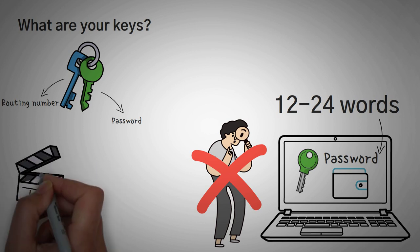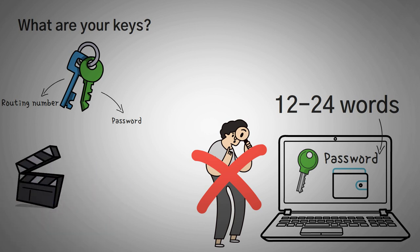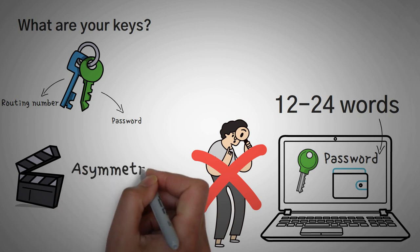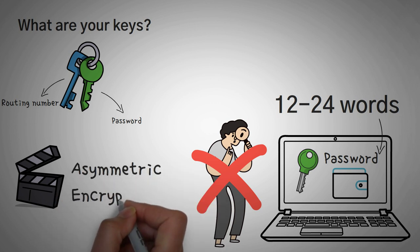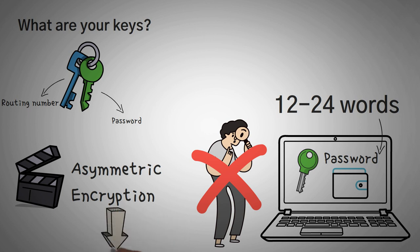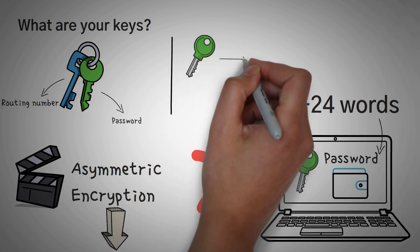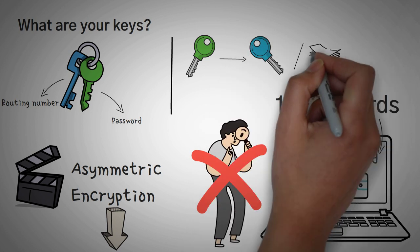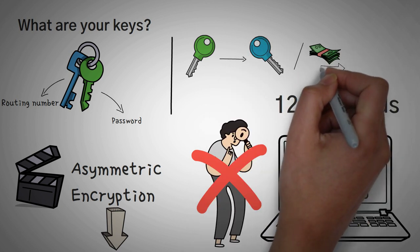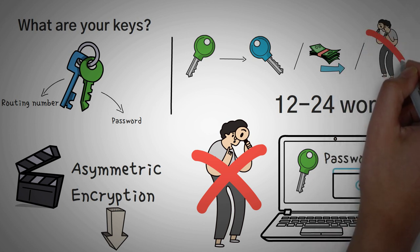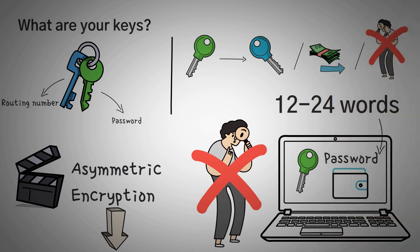If you want a more in-depth explanation on how public and private keys work and how they are secure, you can watch our video on asymmetric encryption, which will be linked in the description below. In this video, we're going to stay a little simpler. In short, your private keys are used to create your public address, and your private keys are also used to send your money. This is why you don't want anyone else to have access to them.